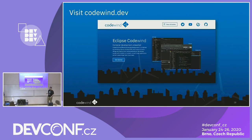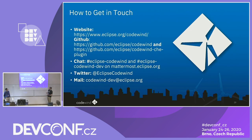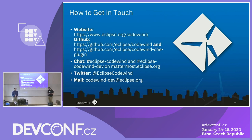Visit our websites at codewind.dev or eclipse.org/codewind — same site. You can follow our documentation and see how to get Codewind installed on Eclipse Che or other platforms. Here's our GitHub at eclipse/codewind and eclipse/codewind-che-plugin. We're on Mattermost with eclipse/codewind and eclipse/codewind-dev, on Twitter, and the eclipse.org mailing list. We're an open source project — we welcome not only users but also developers. If you find bugs, open issues or pull requests. We're looking for contributors.